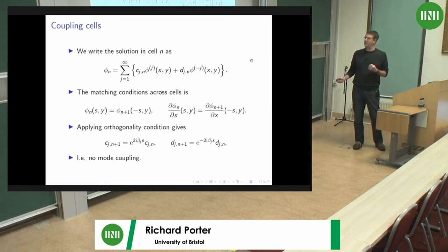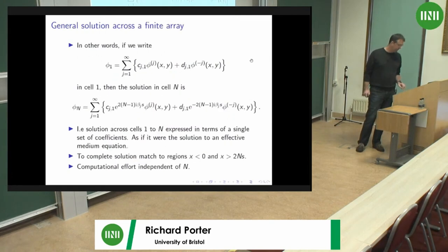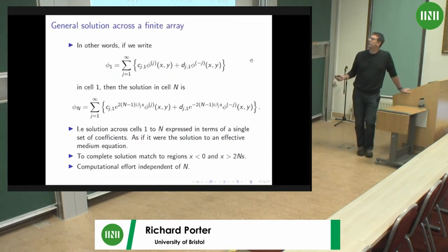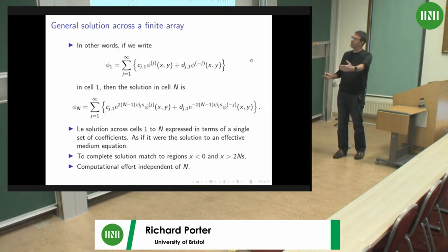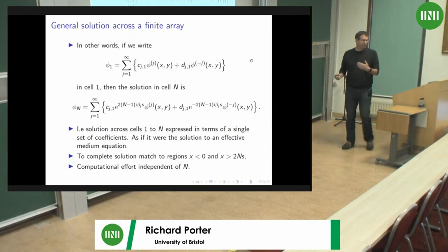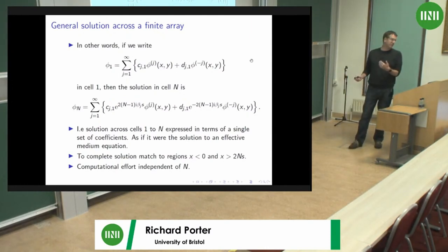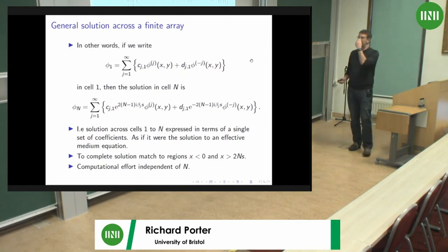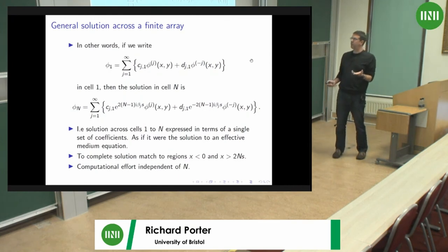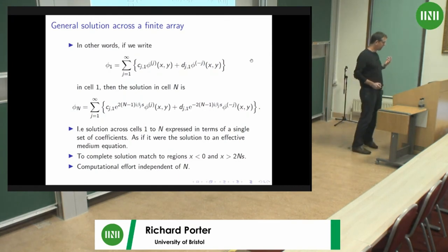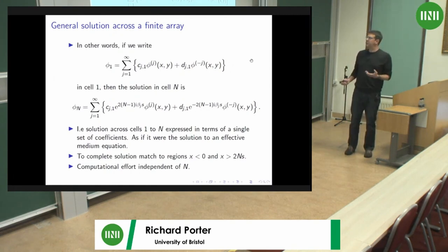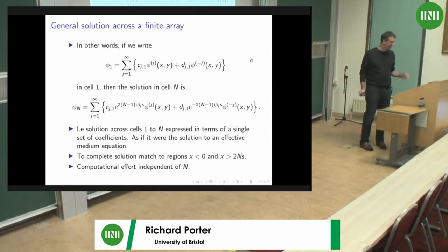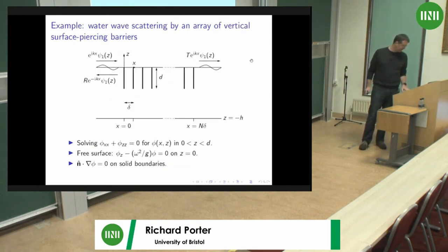These forward and backward propagating modes mean that if you write the solution at the left-hand first cell in terms of coefficients cⱼ1 and dⱼ1, you know the solution everywhere up to the nth cell — still expressed in terms of those same first-cell coefficients. The solution is expressed in terms of a single set of coefficients. It's almost as if the solution itself were a solution to an effective medium equation — as if we've done homogenization. To complete the solution, you match to the two exterior regions on the left and right of the finite array. The computational effort is independent of N, as N is carried only in the phase factors.